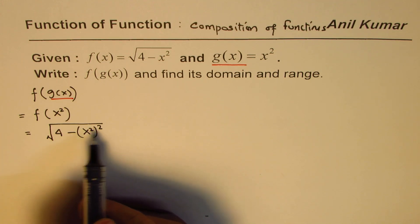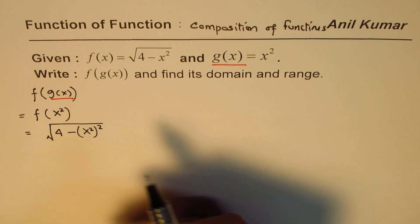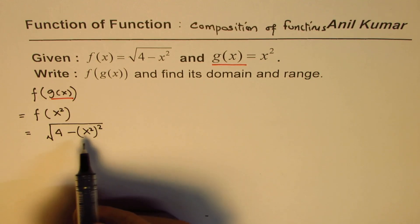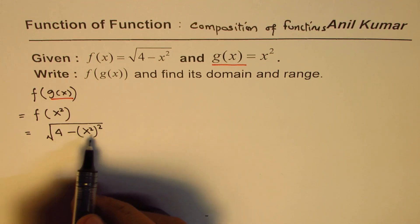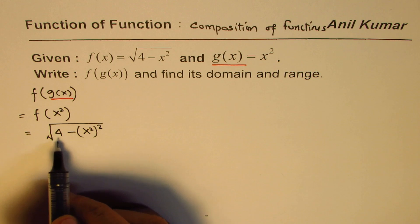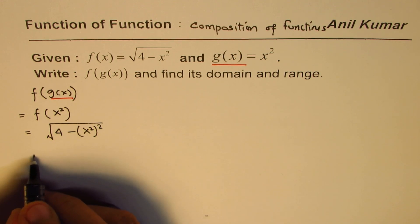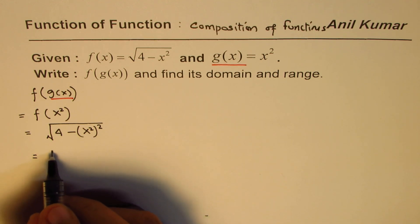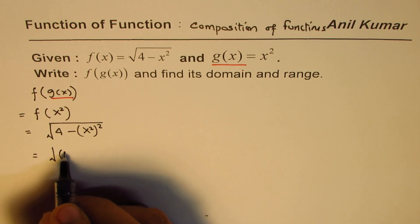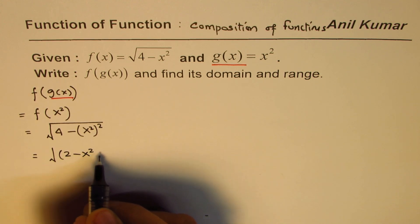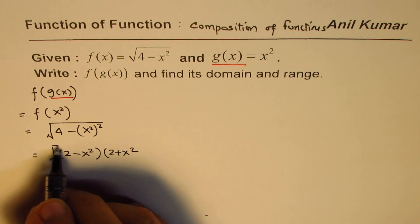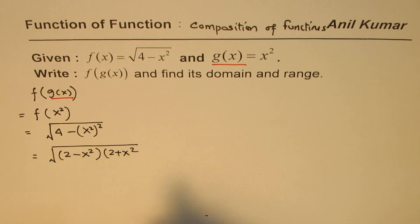Now we need to find the domain and range. It's good practice to factor this expression. We can write it as a difference of squares: square root of (2 minus x squared) times (2 plus x squared).